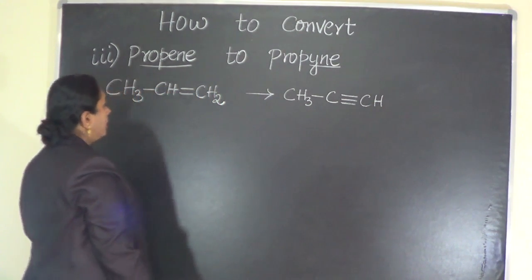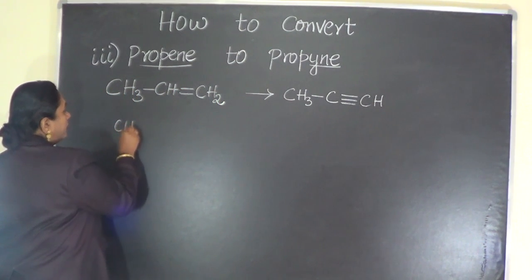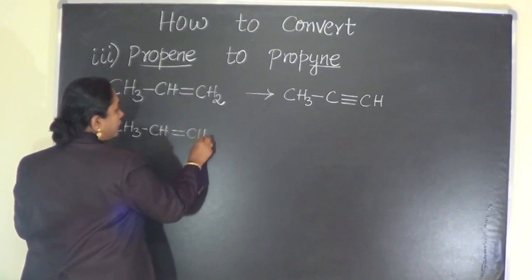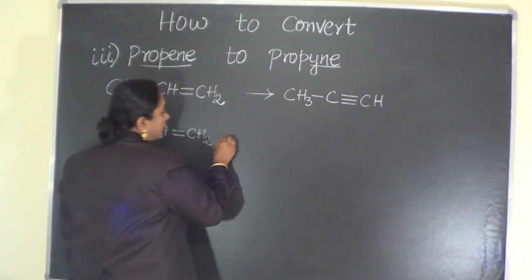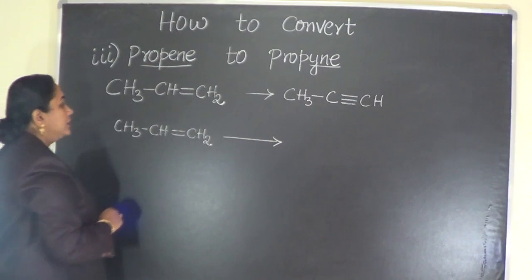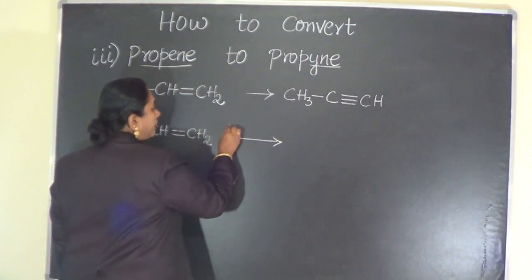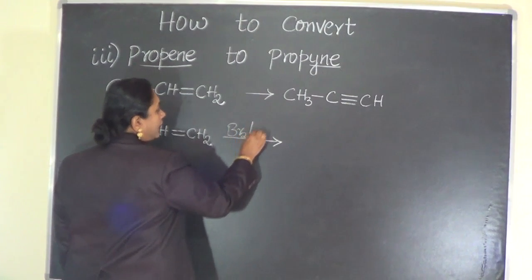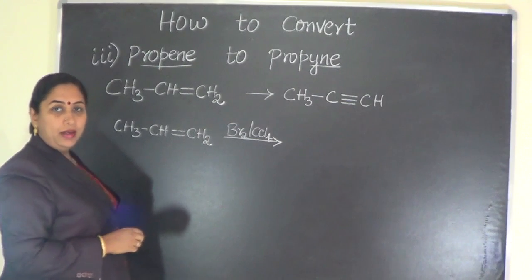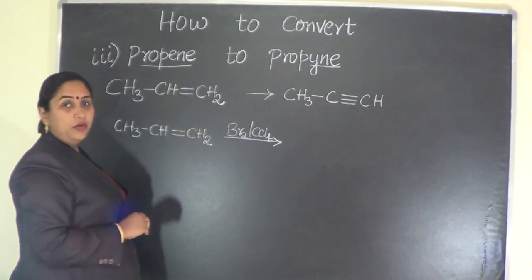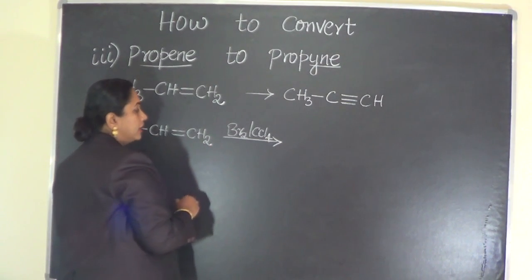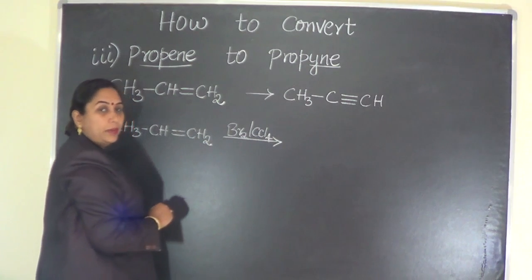Let us see how we can bring about this conversion. Propene is first subjected to either bromination or chlorination, that means addition reaction in presence of an inert solvent like carbon tetrachloride or carbon disulfide. Let me say I am carrying out the process of bromination.